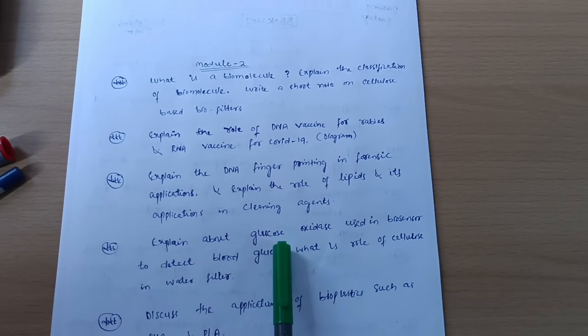Write a short note on cellulose-based biofilters. Explain the role of DNA vaccine for rabies and RNA vaccine for COVID-19. Sometimes they will ask you with the diagram - with neat diagram, explain DNA vaccine for rabies and RNA vaccine for COVID-19.